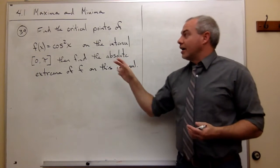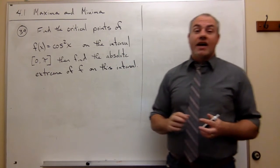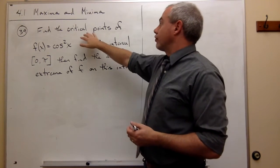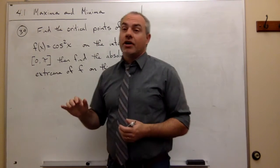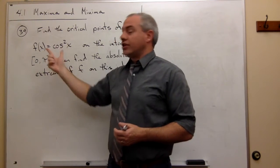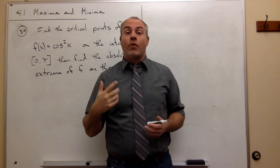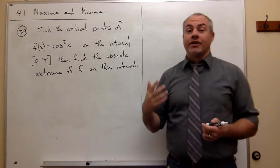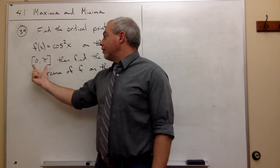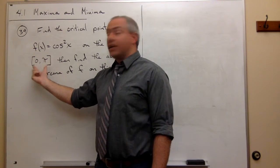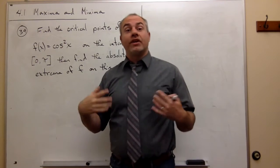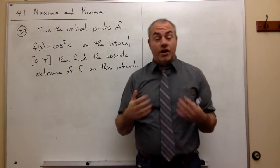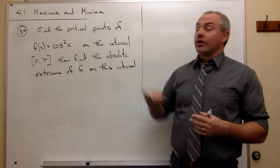Just as we saw in problem number 37, we have a procedure here. The first thing we want to do is find all the critical points. The way I find critical points is I take the derivative of the function and ask where that derivative equals zero or where it is undefined. Then I determine which of those actually falls in the interval I'm concerned with. Once I figure that out, I can test to see where my absolute extrema are.